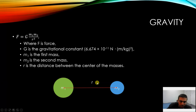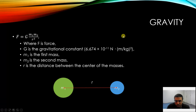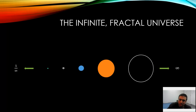Now, gravity is the force exerted on an object by another, which is an inverse of radius squared and a function of their masses. How this produces electromagnetism requires the infinite fractal universe to be considered.